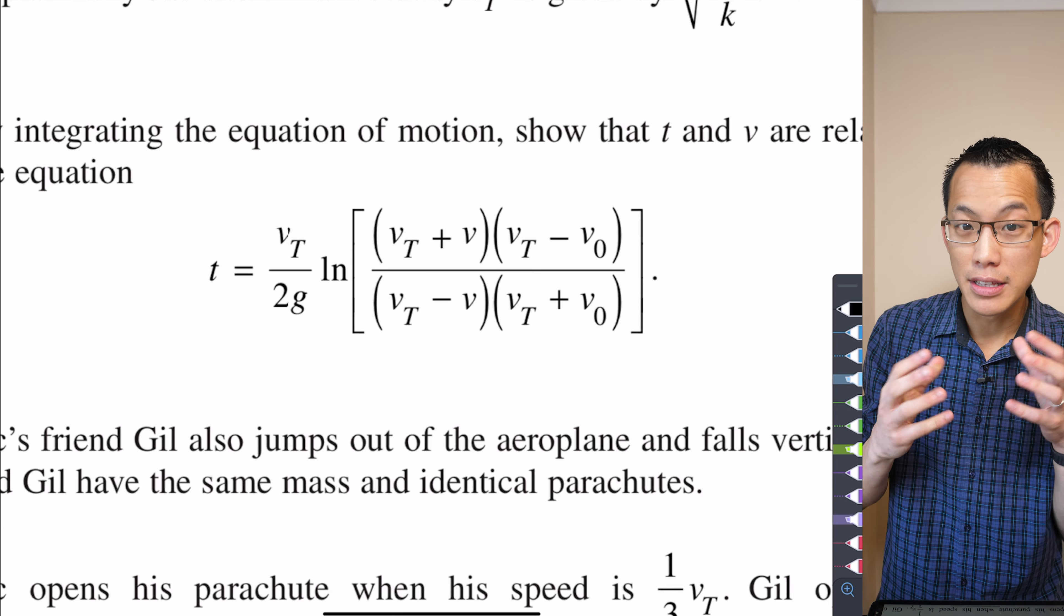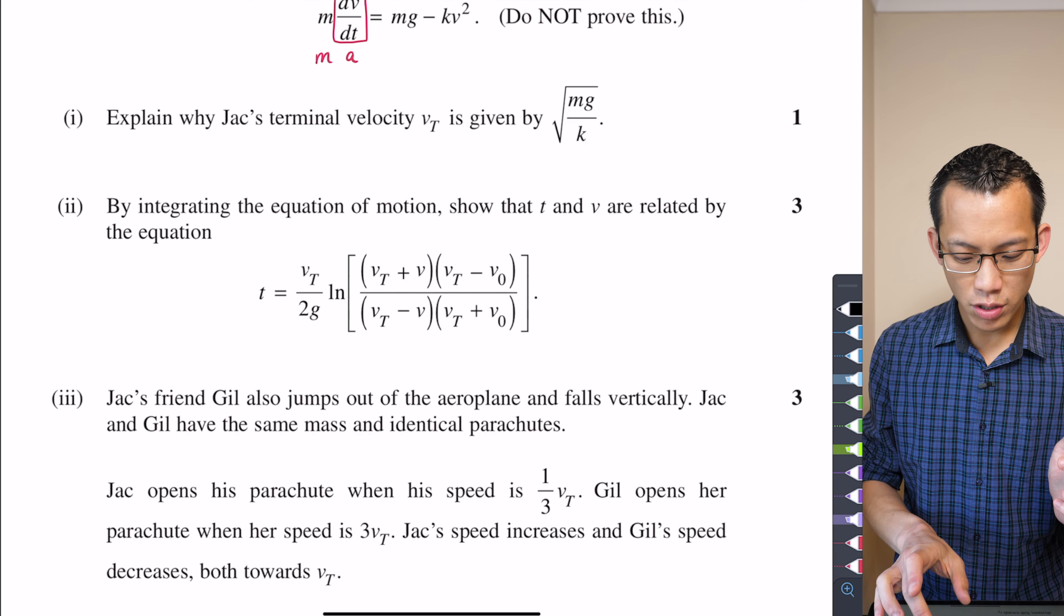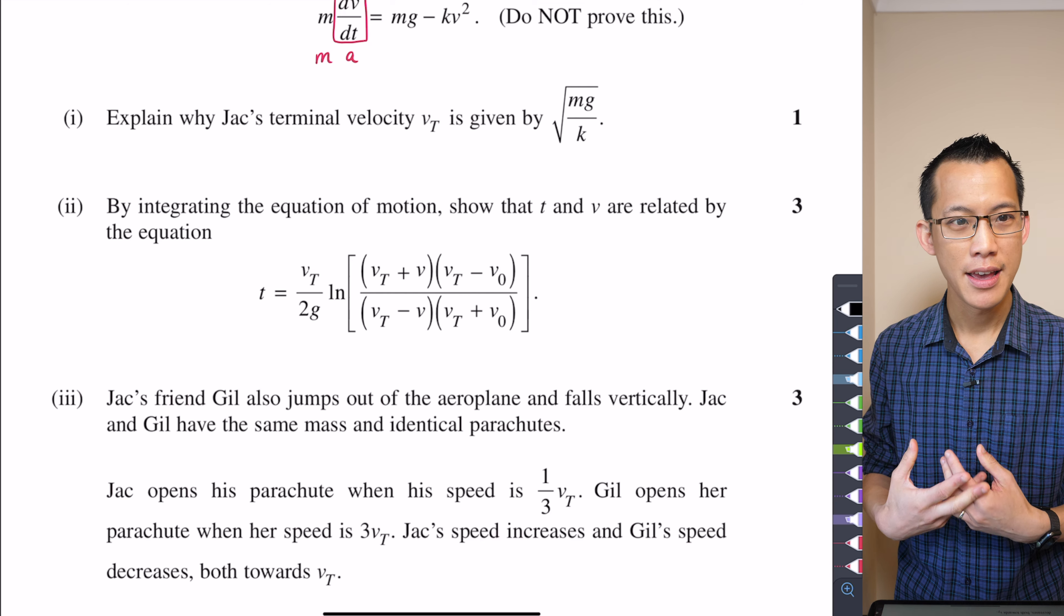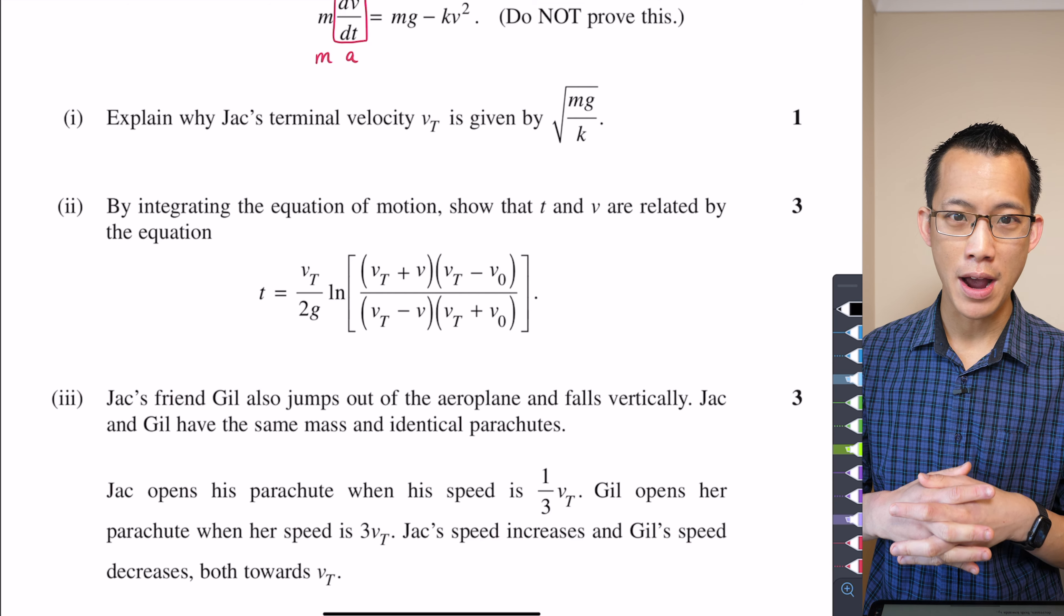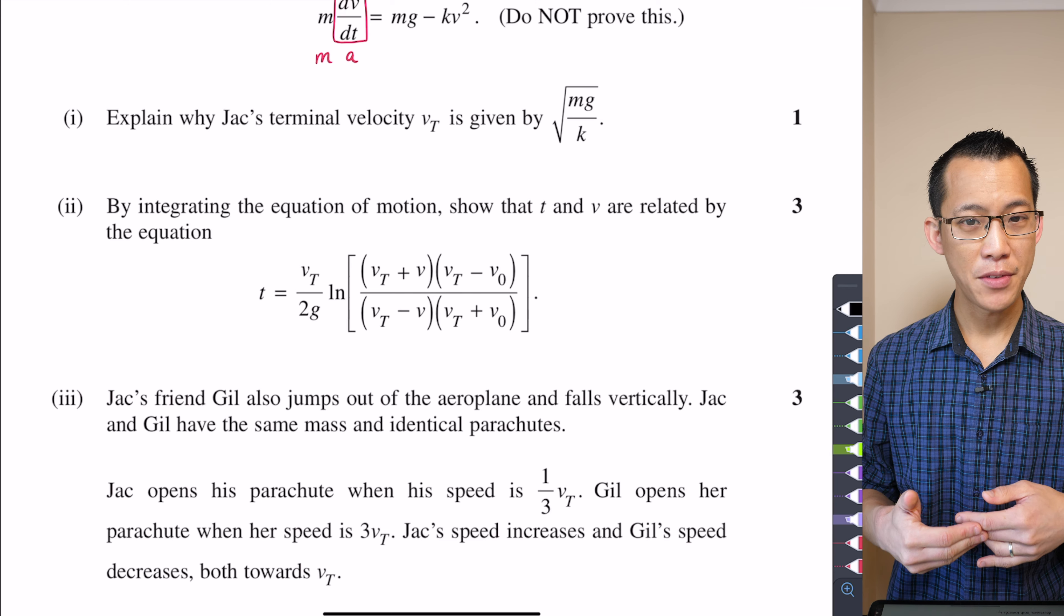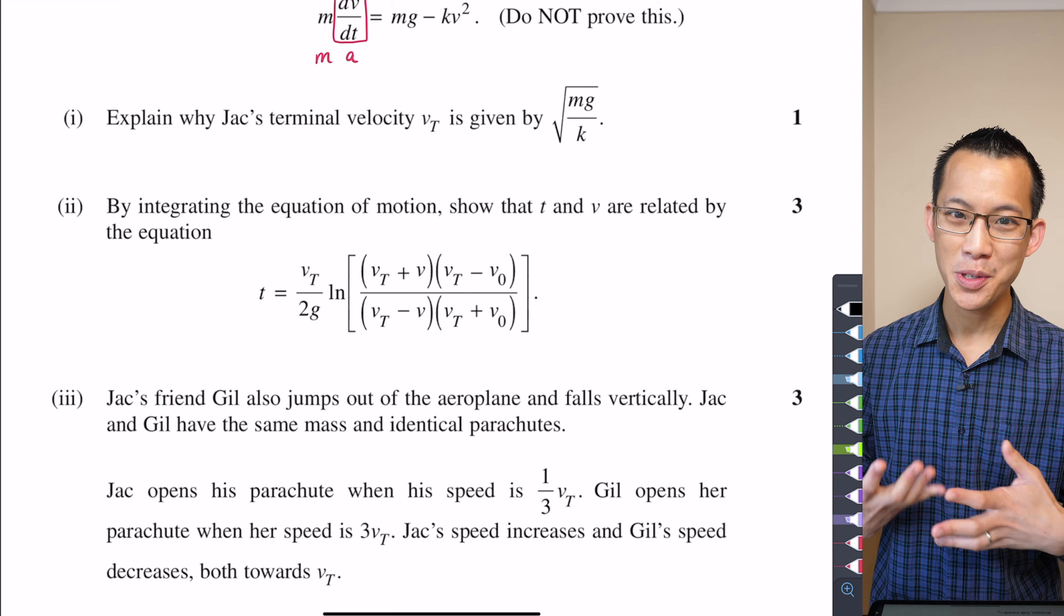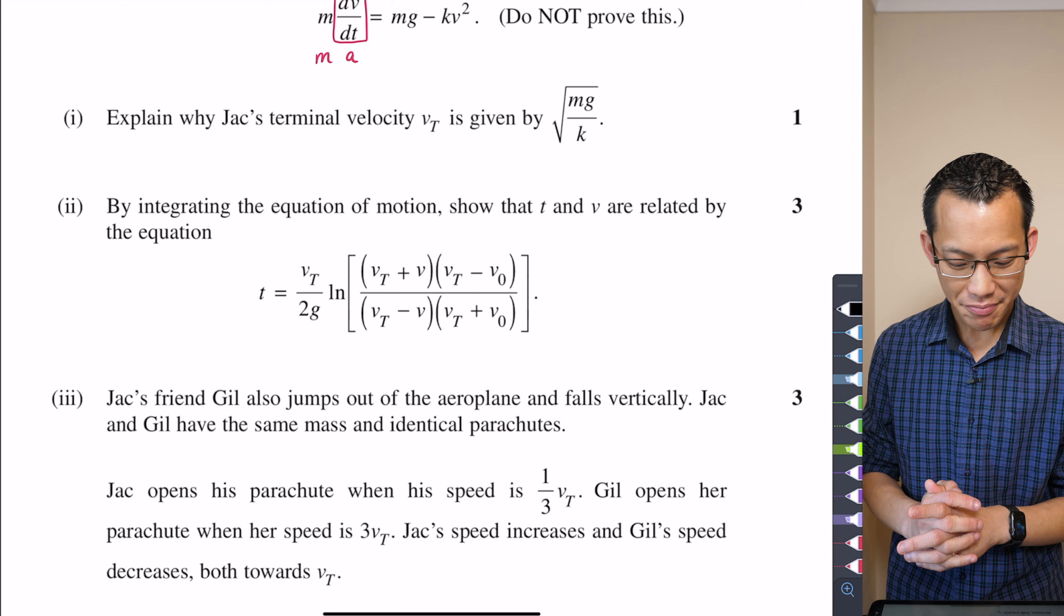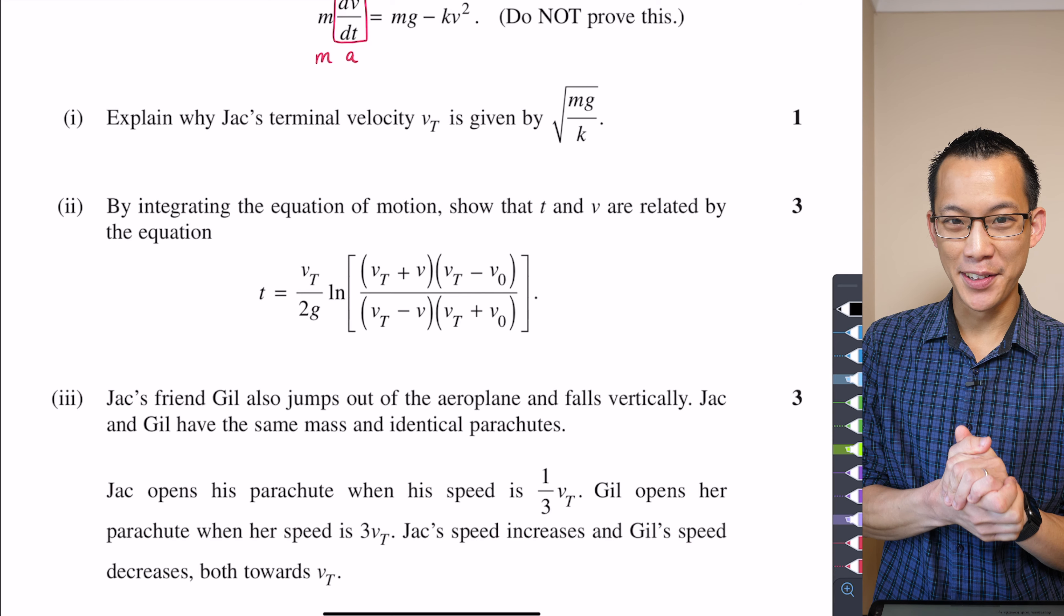There's a bunch of pronumerals that do not appear in this part two result that we're required to prove. So whatever results and whatever pronumerals are not there, if they appear in your integration, you're going to need to do something to eliminate them or substitute to get them away.